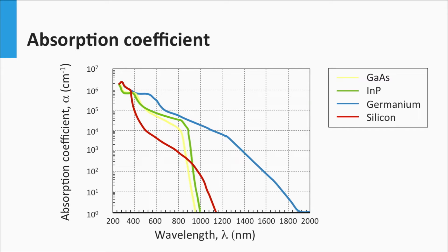Consequently, the absorption coefficient of crystalline silicon compared to direct band gap materials like gallium arsenide and indium phosphide is significantly lower, as we can see in this plot. Crystalline silicon is indicated by the red line, whereas gallium arsenide and indium phosphide are indicated in yellow and green. In the visible spectrum, crystalline silicon absorbs less than gallium arsenide and indium phosphide, but below 364 nm it absorbs just as much, because silicon has a direct band-to-band transition there as well.